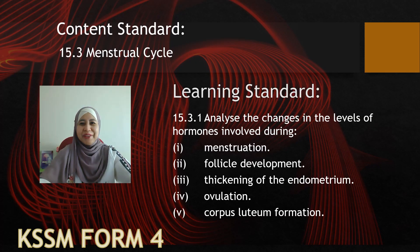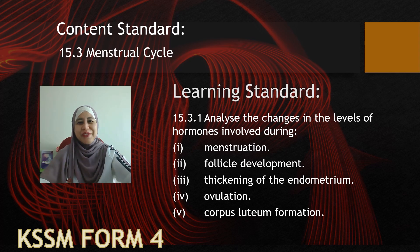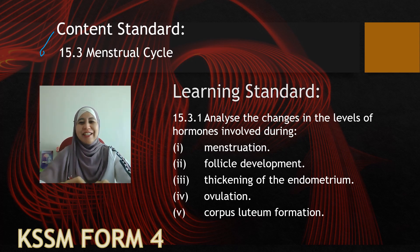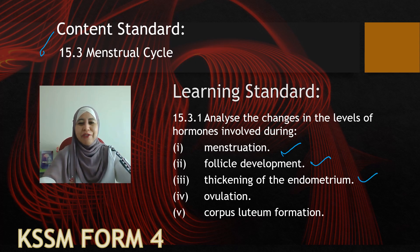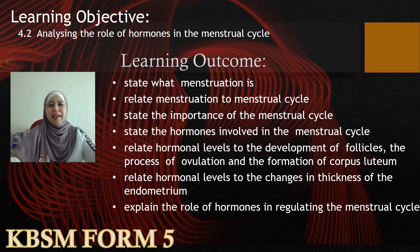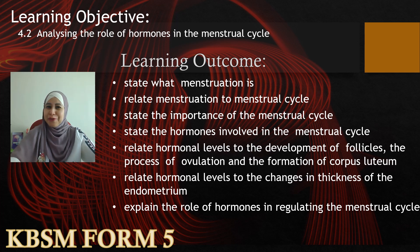For the content standard for KSSM Form 4, it is on 15.3 menstrual cycle. The learning standard 15.3.1 is to analyze the changes in the level of hormones involved during menstruation, during follicle development, during thickening of endometrium, during ovulation and during corpus luteum formation. The learning objective under KBSM Form 5 is 4.2, analyzing the hormones in the menstrual cycle.